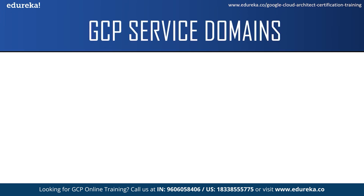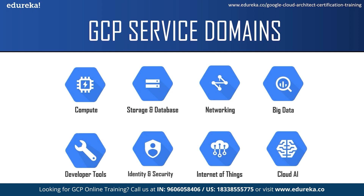Gartner has positioned Google as the magic quadrant leader. Google Cloud's global network spans across 25 regions with 76 zones and is available to users from 200+ countries and territories. A region is a specific geographical location where you can host your resources, and a region can have three or more zones. GCP provides various services in different domains. First is Cloud Compute Engine, where you can create instances of virtual machines. Second is storage and database — GCP offers highly durable, available and scalable storage solutions. Next is the networking service, which provides fast, reliable and secure networking that scales based on user demands.